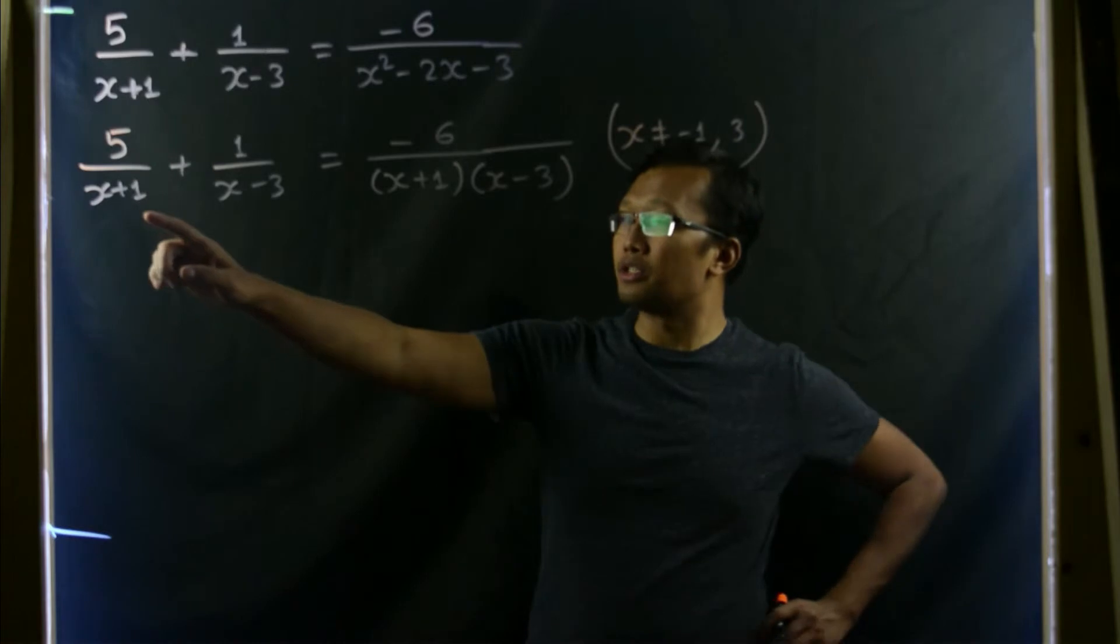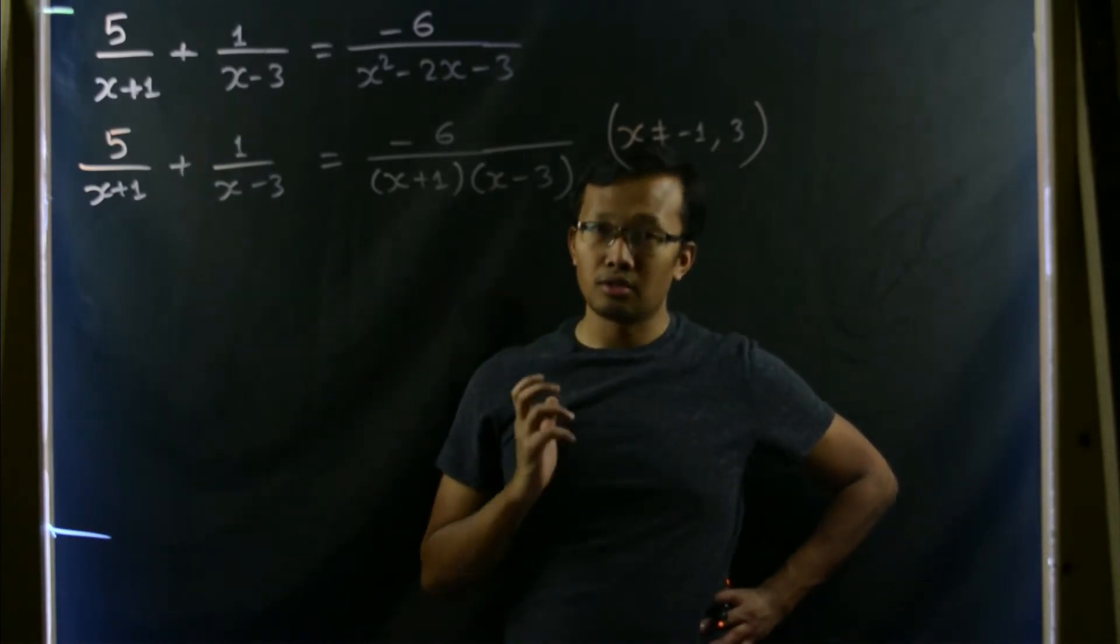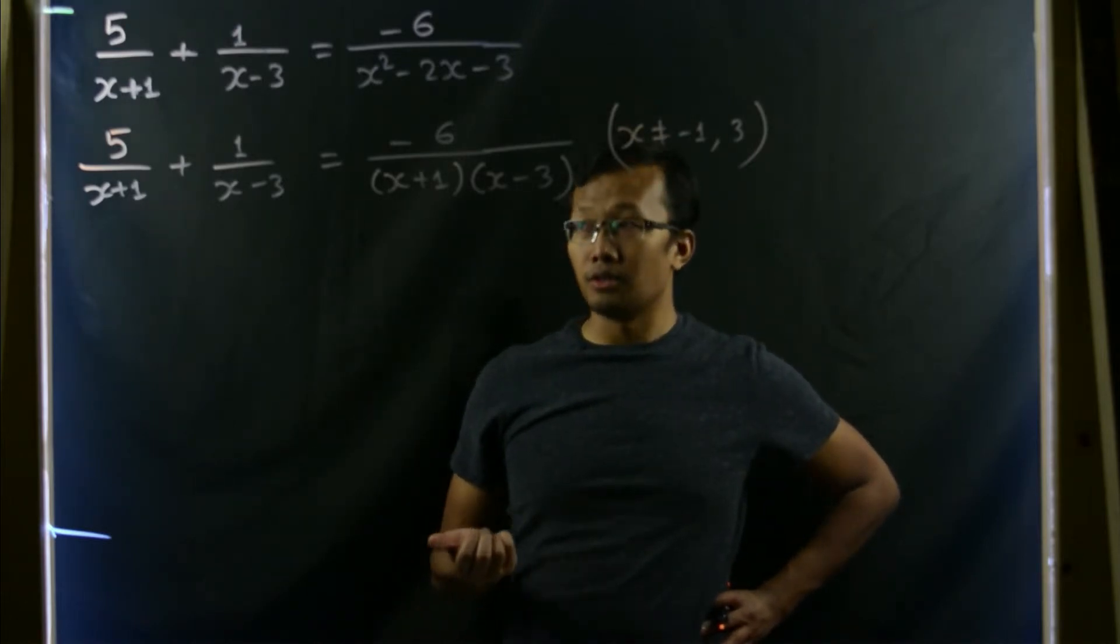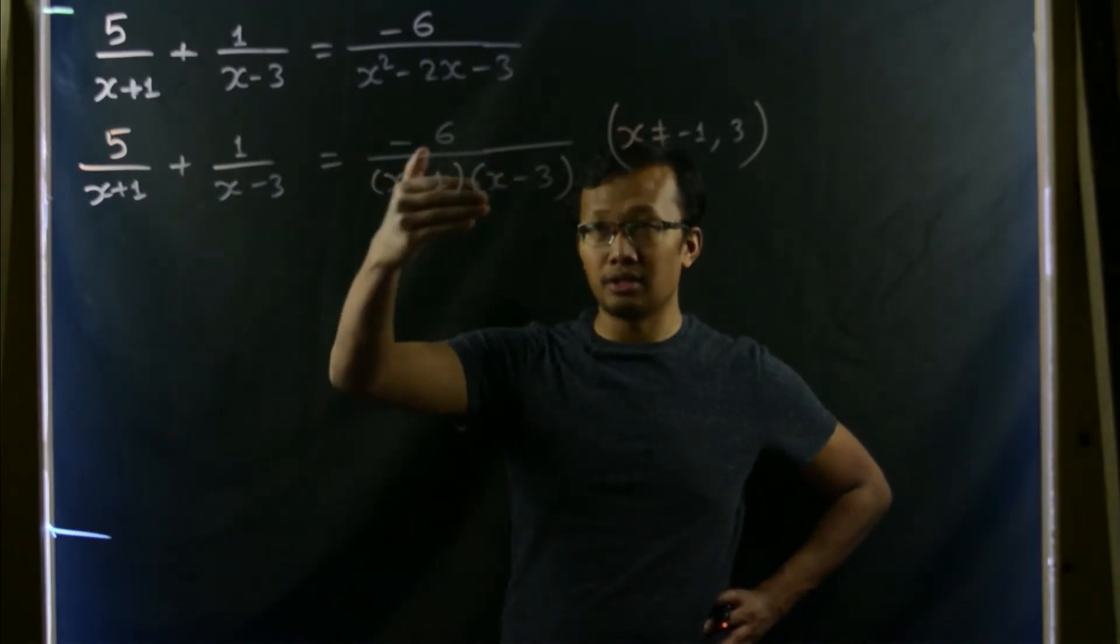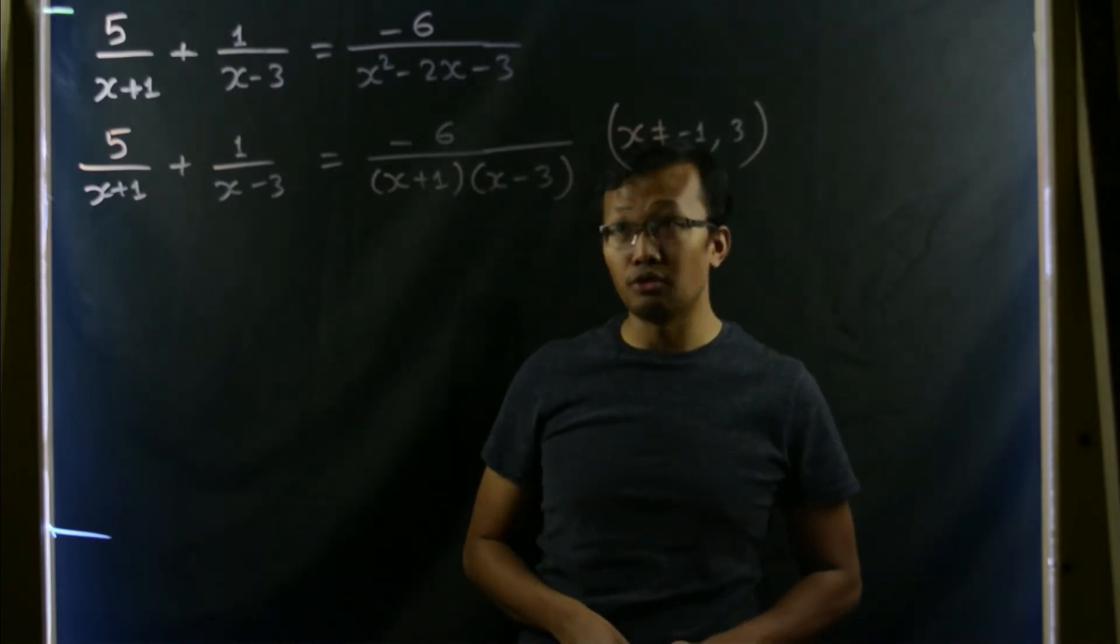This equation has two denominators, x+1, x-3, and their product. So let us get rid of the denominators at first. By that I mean let us multiply the entire equation on both sides by this product, (x+1) times (x-3).